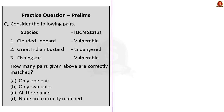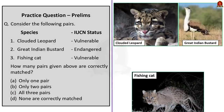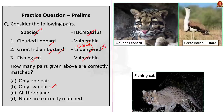Question 2: Consider the following pairs — clouded leopard: vulnerable; great Indian bustard: endangered; fishing cat: vulnerable. Which pairs are correctly matched? The IUCN status of the great Indian bustard is critically endangered, not just endangered — so that statement is incorrect. Statements 1 and 3 are correct. The correct answer is option B: only two pairs. Question 3: Statement 1 — all biomedical wastes are incinerated — is incorrect because incineration is just one of the options; others include plasma pyrolysis, deep burial or recycling. Statement 2 — waste to energy is possible with municipal solid waste — is correct. Statement 3 — plastic waste is accepted as fuel in cement kilns — is correct, as energy recovery from plastics is considered when recycling is no longer possible. The question asks for incorrect statements, so the correct answer is option A: one only.